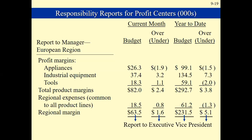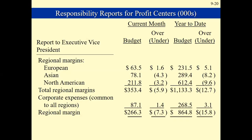Then from the region, we report now to the executive vice president. The executive vice president would be seeing the regions — European, Asian, North American — less the corporate expenses, which are common to all regions. So overall, we now have the different regional or overall margins.